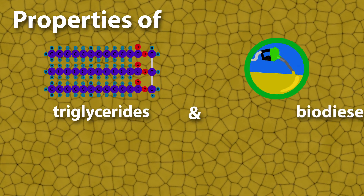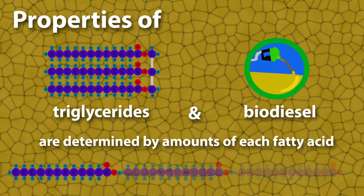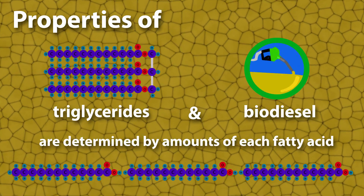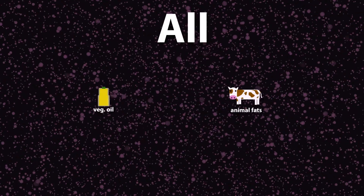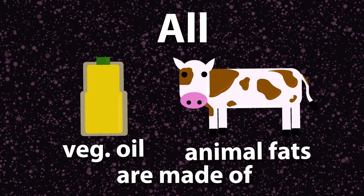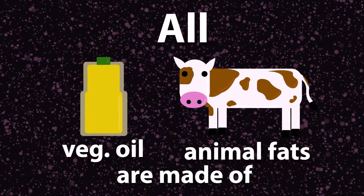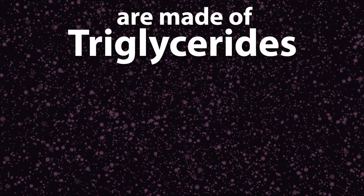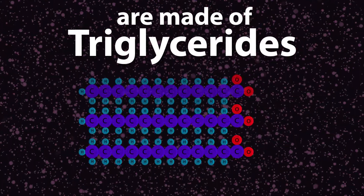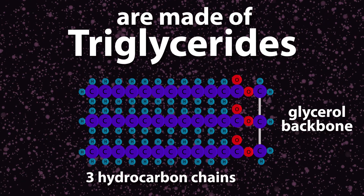Properties of triglycerides and biodiesel depend on fatty acid amounts. All vegetable oil and animal fats are made from triglycerides, which have three hydrocarbon chains and a glycerol backbone.